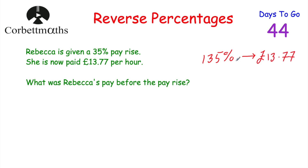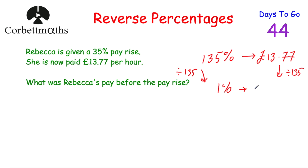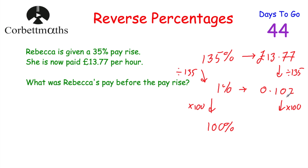So £13.77 equals 135%. Now we're going to find what 1% is. To get from 135% to 1%, we divide by 135 on both sides. So 1% is £13.77 divided by 135, which equals £0.102. We now know what 1% is, but we want 100%. So we multiply by 100, giving us £0.102 times 100, which equals £10.20.